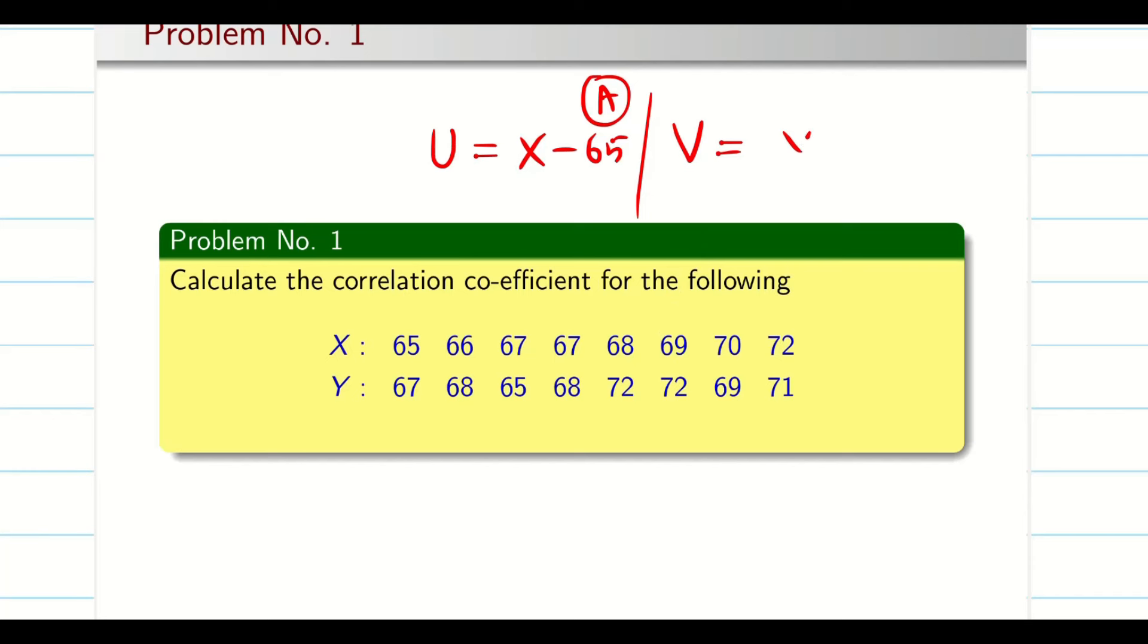Now similarly, you can take y and subtract 65 or 66. Now we can generate the new variable u and v which consists of single digit and we can easily solve the problem. So this is one way, but what we are going to do, since we have a calculator, we don't want to worry about introducing new variables u and v.